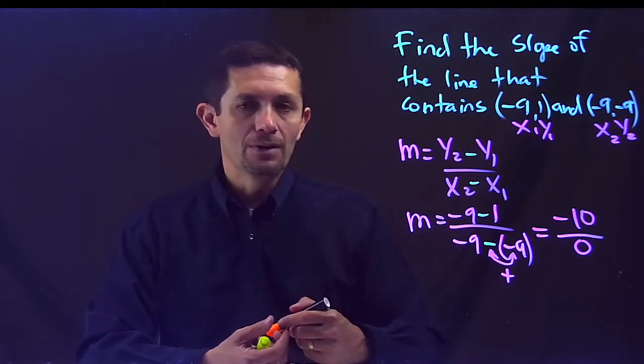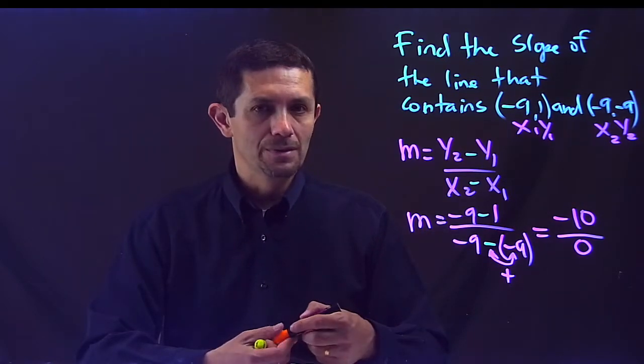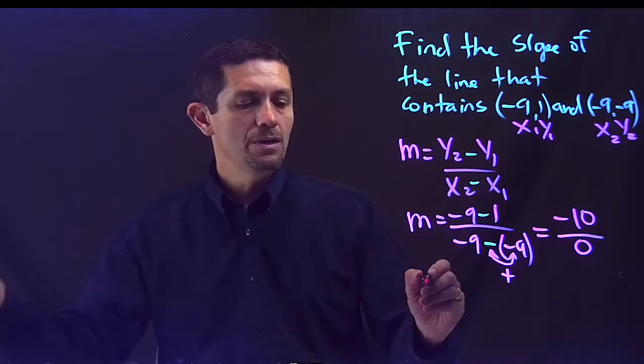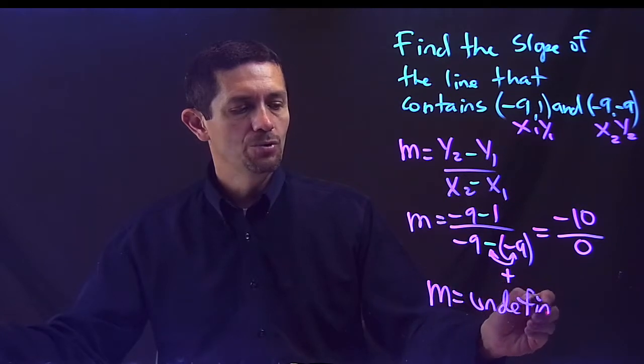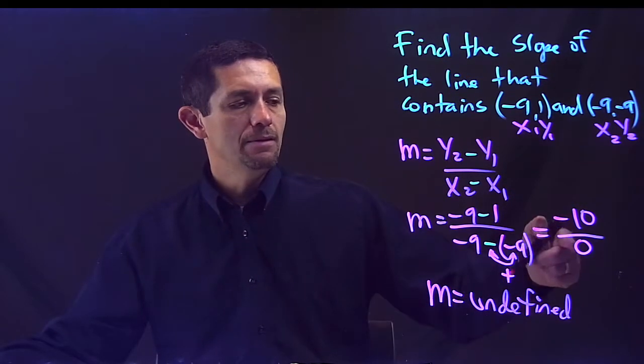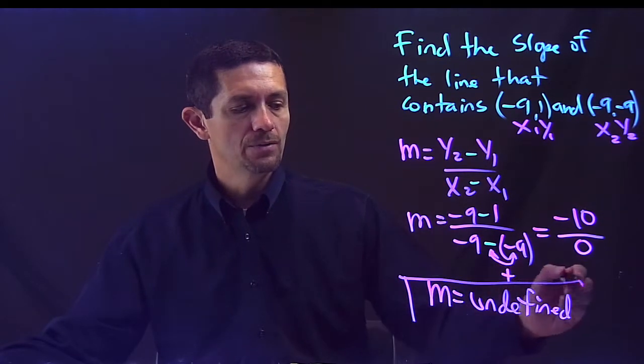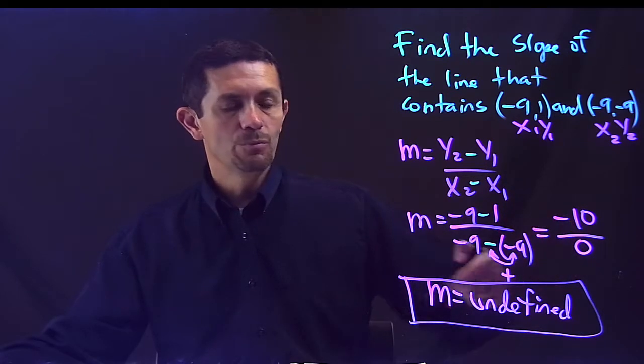Never, you would never give that as a final answer. Negative 10 over 0 is not a final answer, you need to identify what's going on. So every time you divide by 0, your answer will be undefined. Anything divided by 0 is undefined, so this is your final answer. Any number divided by 0 will be undefined.